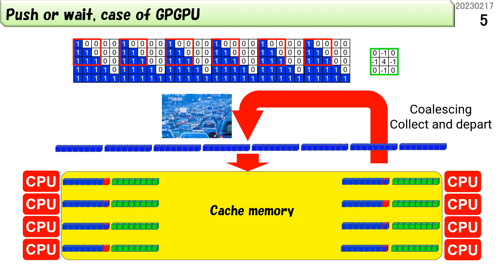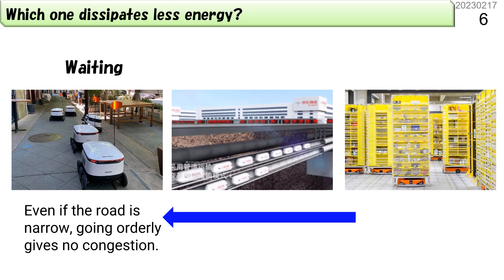However, if the destinations are scattered, GPU can do nothing. Whether coalescing is possible or not highly depends on the skill of the programming. But we have better ways to save energy.